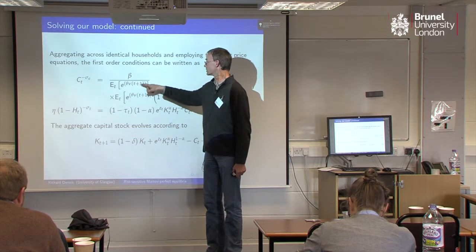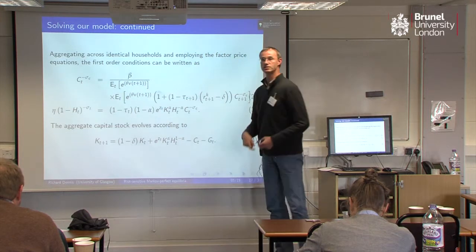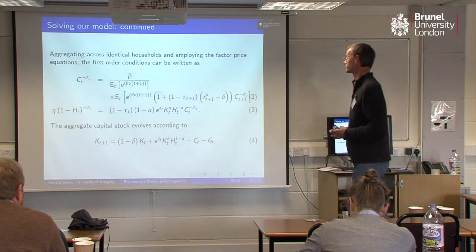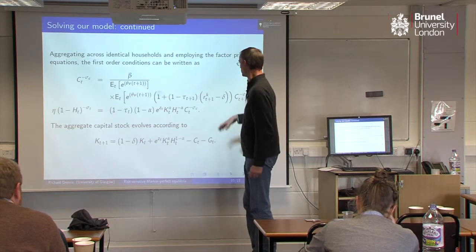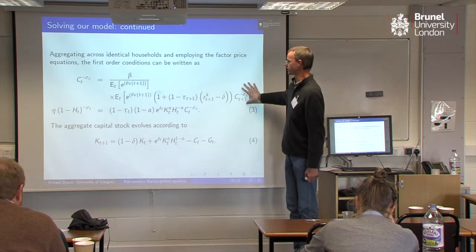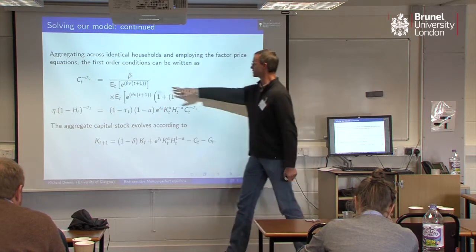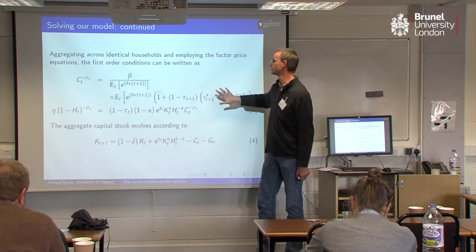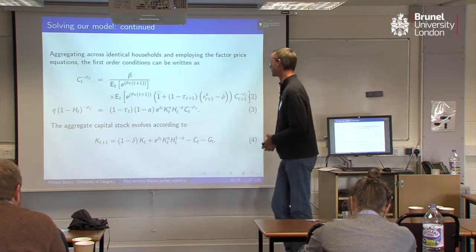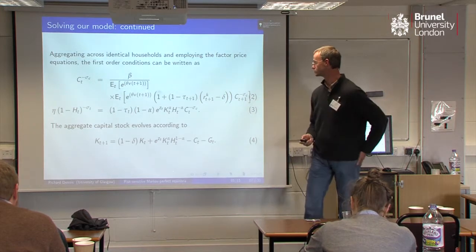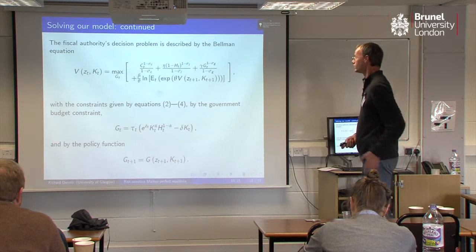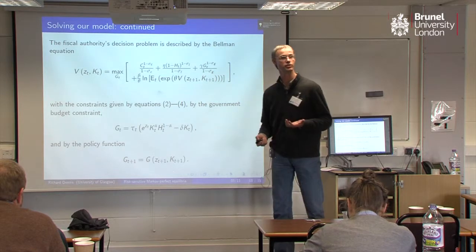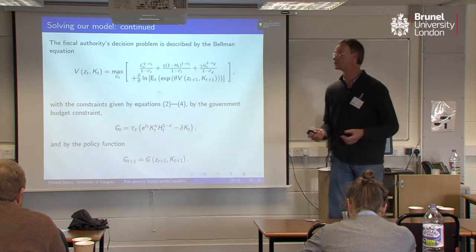So one of the things that risk-sensitivity does is it tends to make agents behave like they're more patient. In terms of solving the model, the thing that's tricky about it is you've still got this value function sitting in the first-order condition — you don't get the value function eliminated from the problem. We've got these three equations coming from the household's problem. The firm's problem just generates first-order conditions for prices that we can substitute into the budget constraint and give ourselves a resource constraint.